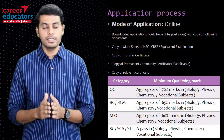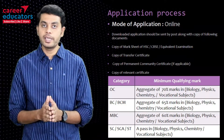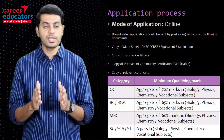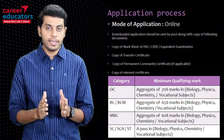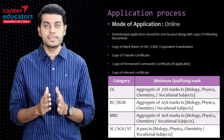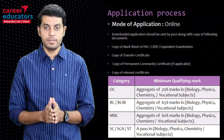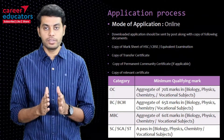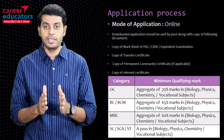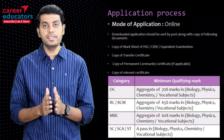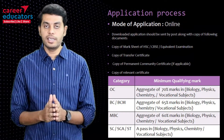The university has some eligibility requirements. If your category is OC, the aggregate mark of biology, physics, and chemistry must be a minimum of 70%. If you belong to BC or BCM category, it should be a minimum of 65%. MBC category requires 60%. If you belong to SC, ST, or SCA category, you just need to pass.